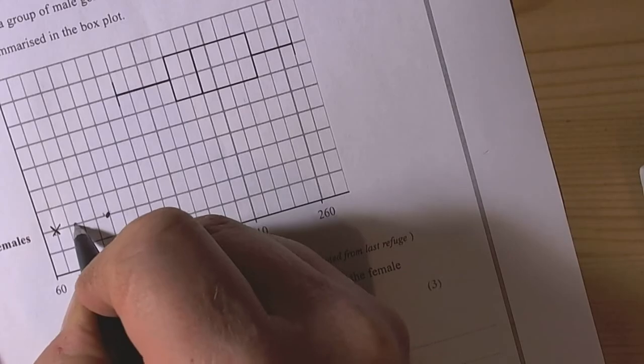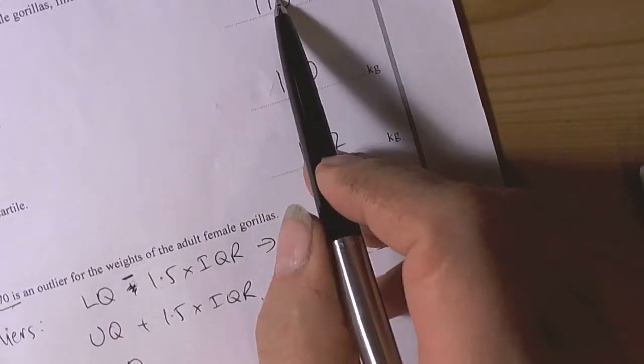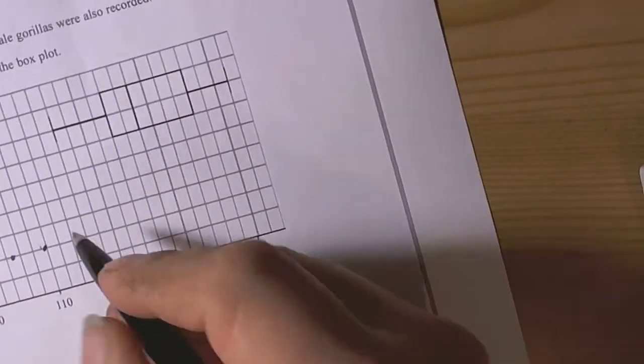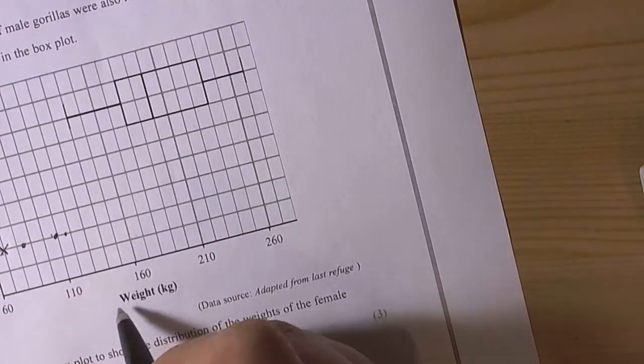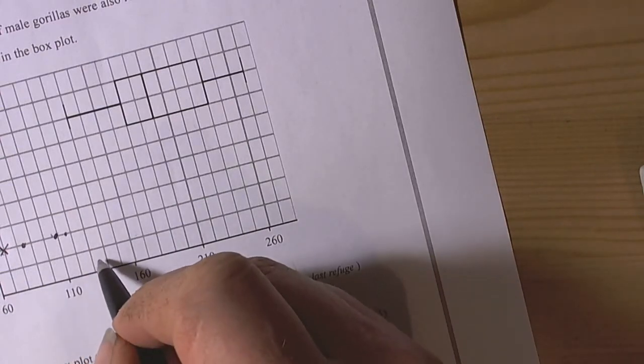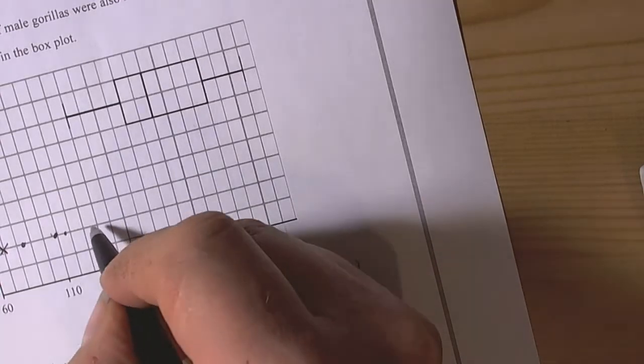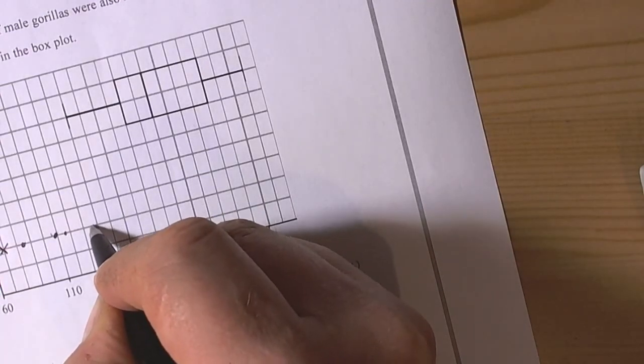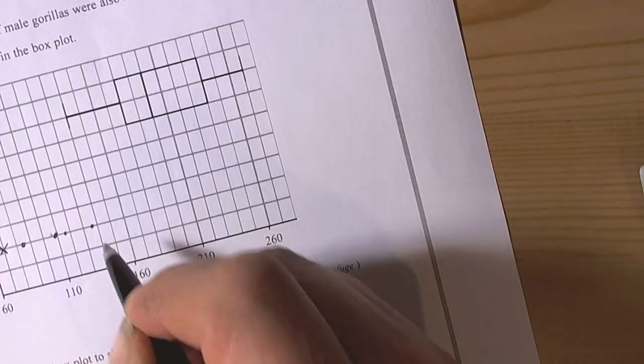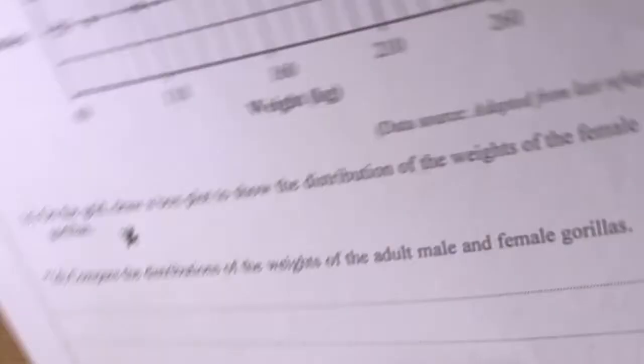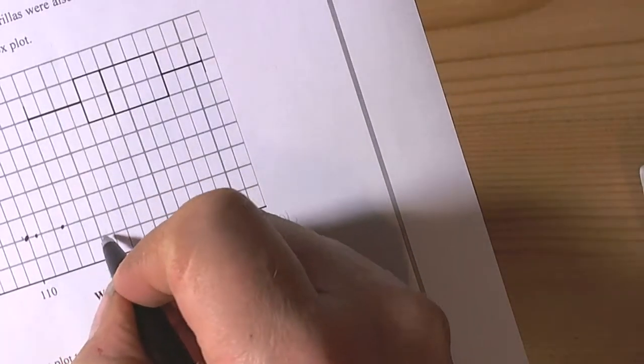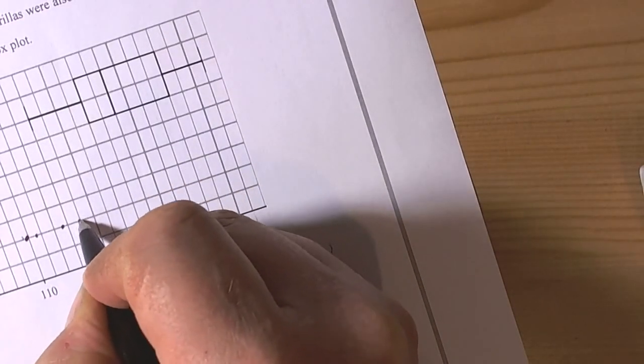And our median value we calculated as 115, so 110, 120, so 115. And our upper quartile we calculated as 127, so roughly there. And our last value is the maximum in the data which was 150. So 150 is there.